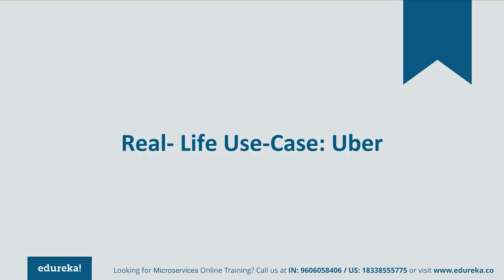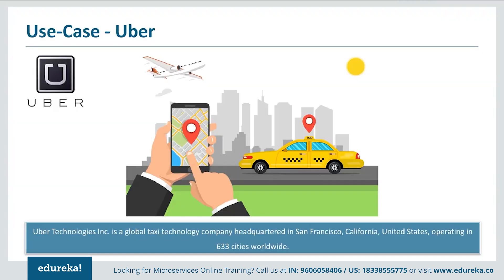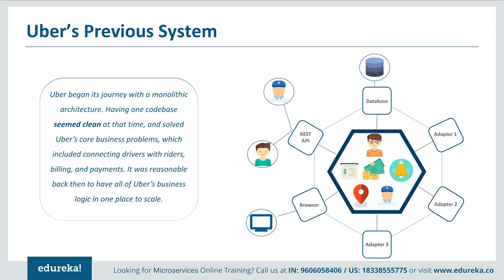Let's look into microservices and their implementation using a real life use case of Uber. Uber Technologies is a global taxi technology company headquartered in San Francisco, United States, operating in 633 cities worldwide. Like many other startups, Uber also started its journey with a monolithic architecture for a single city. Initially, they had a REST API with which the passenger and the driver were connected. The mobile API was connected to the REST API, which was then connected to the monolithic architecture as a backend server. For people accessing through web UI, they were also connected to the same server.